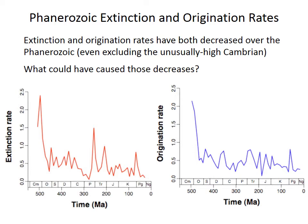Extinction of species and origination — which is the evolution or the appearance of new species — are always occurring. But it's been observed for a few decades at least that the rate of extinction and origination has generally decreased through time. Both of these curves — extinction on the left, origination on the right — have quite a lot of volatility, and the Cambrian is extremely high with extremely high rates of turnover. But even from the Ordovician through the present, there's a decrease in extinction and origination, although perhaps less so.